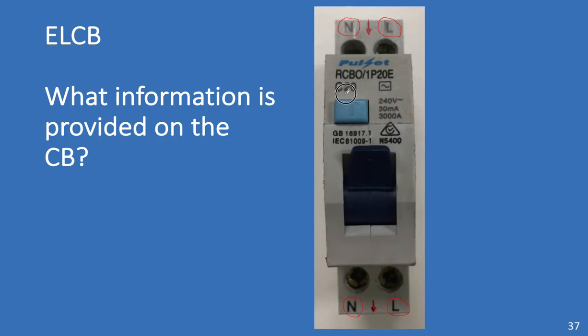It tells us here that it is 20 amps. The C is telling us it's a C curve. Symbol telling us it's AC. The button. You can see the T on the front is the trip test. We know it's 240 volts AC rated. Then we've got this 30 milliamps and 3000 amps. So, what are they about? The 30 milliamps is the trip leakage and the 3000 amps is the fault level. So, this circuit breaker can only handle 3000 amps fault level. The previous one was able to handle 9000 amps fault level.